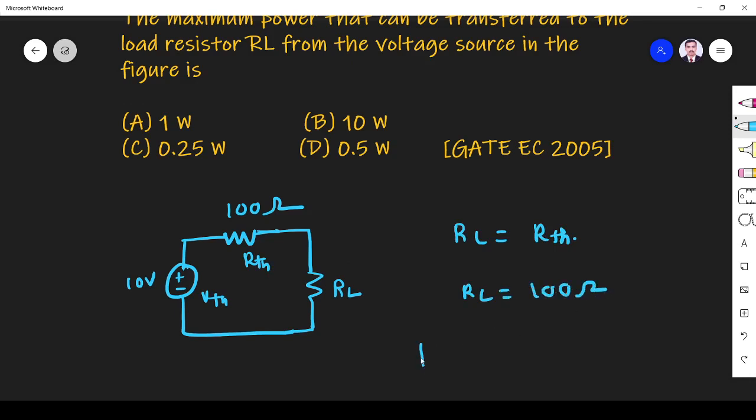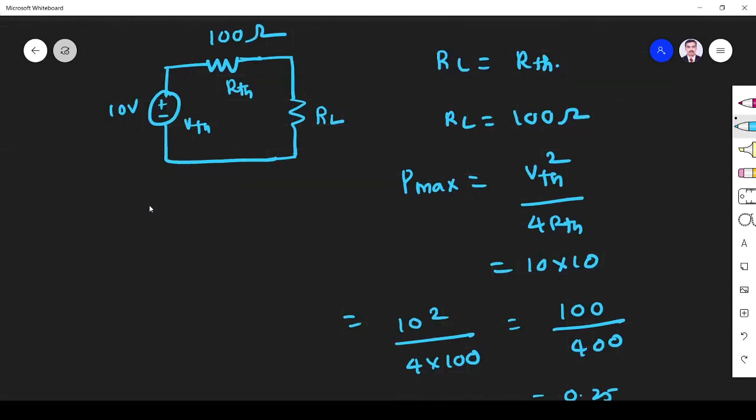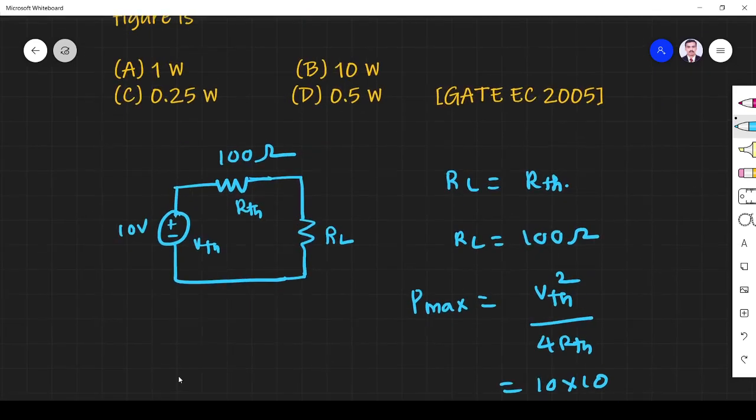So RL must be equal to 100 ohm. What is the maximum power transfer? If we know V-thevenin and R-thevenin, that is given by V-thevenin squared divided by 4 R-th. So V-thevenin is 10 squared divided by 4 R-th, that is equal to 0.25 watts. So option C is the right answer.